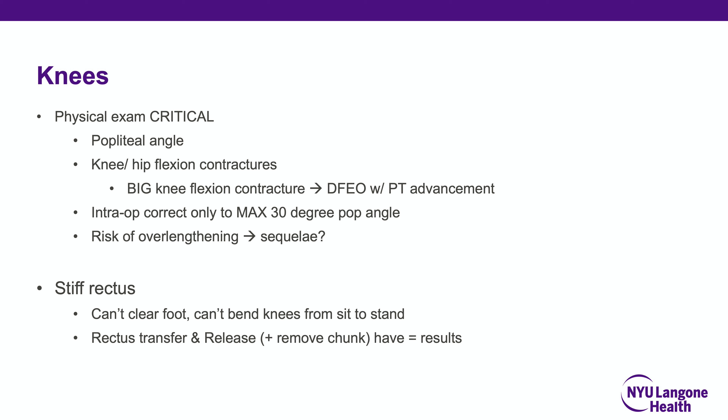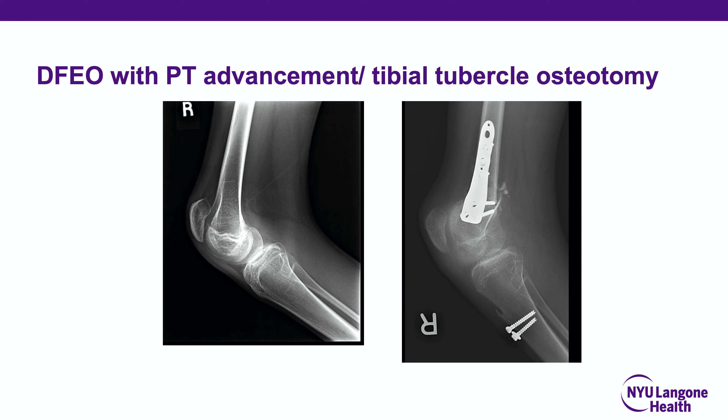Also consider a stiff rectus. Children who cannot clear their foot or bend their knee from sitting to standing can have a rectus femoris that is perpetually active in every phase of gait. A rectus transfer — and more commonly now, a release with removal of a chunk of the rectus — appears to have equal results in allowing foot clearance. A distal femoral extension osteotomy with patellar tendon advancement, and often a tibial tubercle osteotomy to address patella alta, may also be needed.